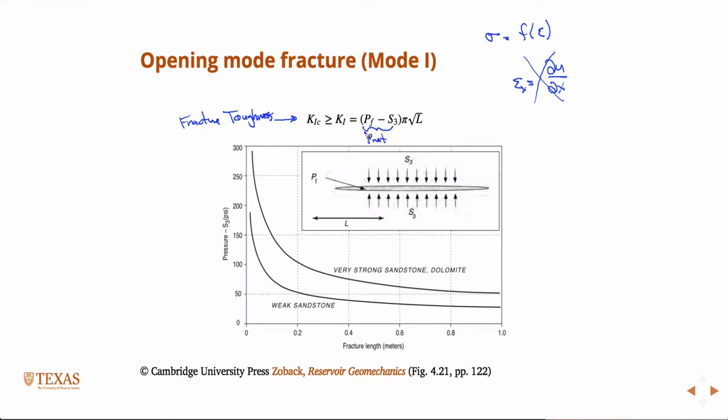Times pi times the square root of L. Well, because you have this square root of L thing, what you see is that at very small fracture lengths, it takes large net pressures to propagate the crack. But, as the crack gets longer, the stress intensity factor is attenuated by the square root of L. And so it drops off rapidly. So we call this sort of early regime a toughness dominated regime.